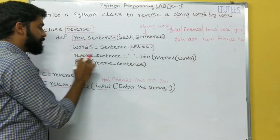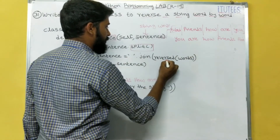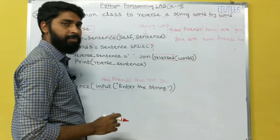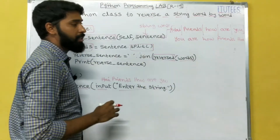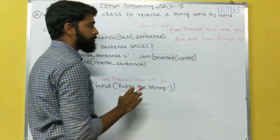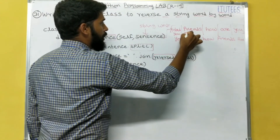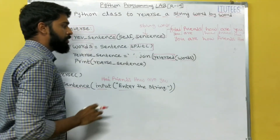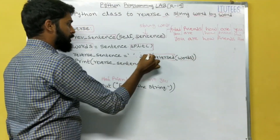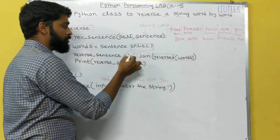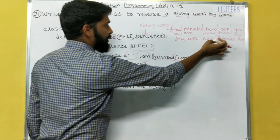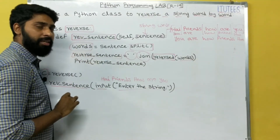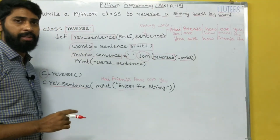I am storing the answer in one variable: reverse_sentence equals to reversed(words). 'reversed' is a predefined method that reverses the order in the list, so the last element 'you' becomes the first one — giving 'you are how friends hi'. Then you join all these words using the join method with a space, producing 'you are how friends hi', which is assigned to reverse_string and printed.